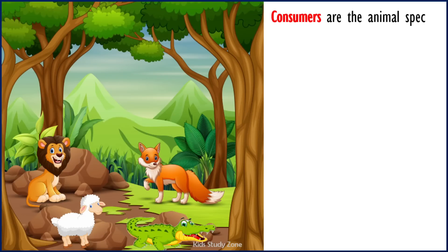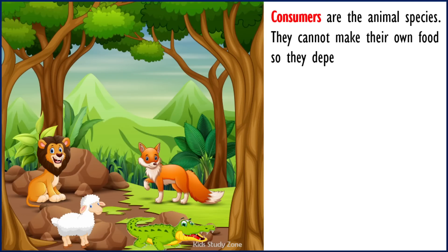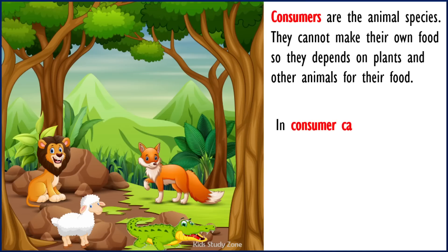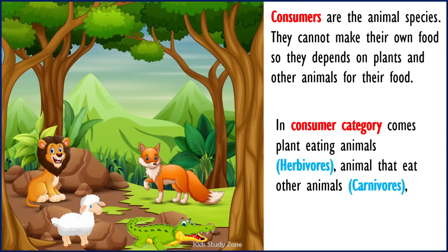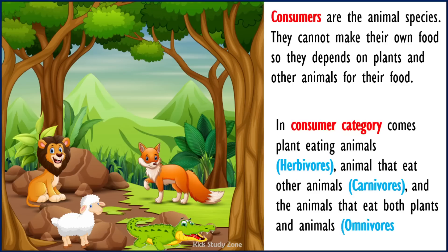Consumers are the animal species. They cannot make their own food, so they depend on plants and other animals for their food. In the consumer category come plant-eating animals called herbivores, animals that eat other animals called carnivores, and animals that eat both plants and animals called omnivores.